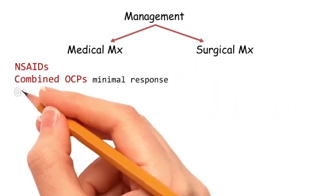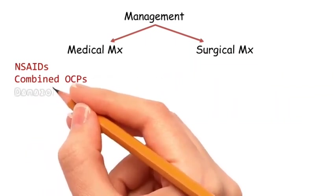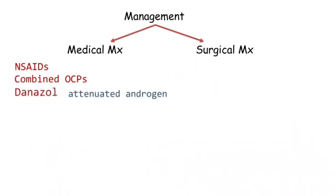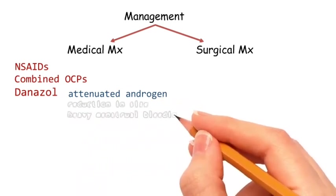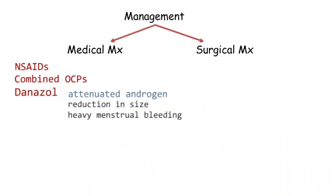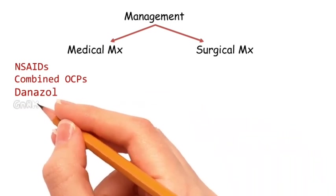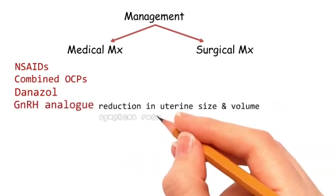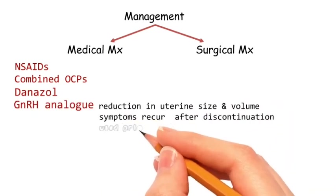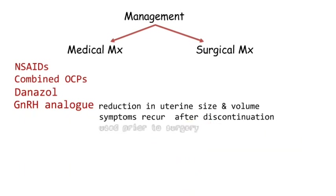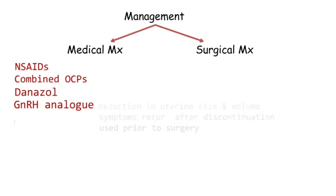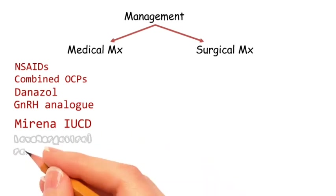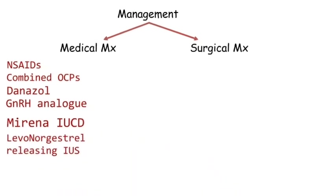Combined OCPs give a minimal response. Danazol is an attenuated androgen used for the reduction of uterine size and heavy menstrual bleeding. GnRH analogues are used for reduction of uterine size and volume, but symptoms recur after discontinuation and it is used only prior to surgery. The Mirena IUCD is the levonorgestrel-releasing intrauterine system.